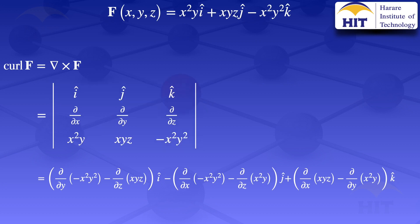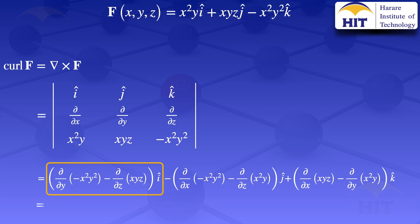We are done with that setup and now go on to evaluate the partial derivatives. For the î component, the partial derivative with respect to y of −x²y² — we differentiate y² with respect to y, treating x as a constant, giving 2y, multiplied by −x², so we get −2x²y. The partial derivative with respect to z of xyz, treating x and y as constants, gives xy. So the î component is (−2x²y − xy)î.